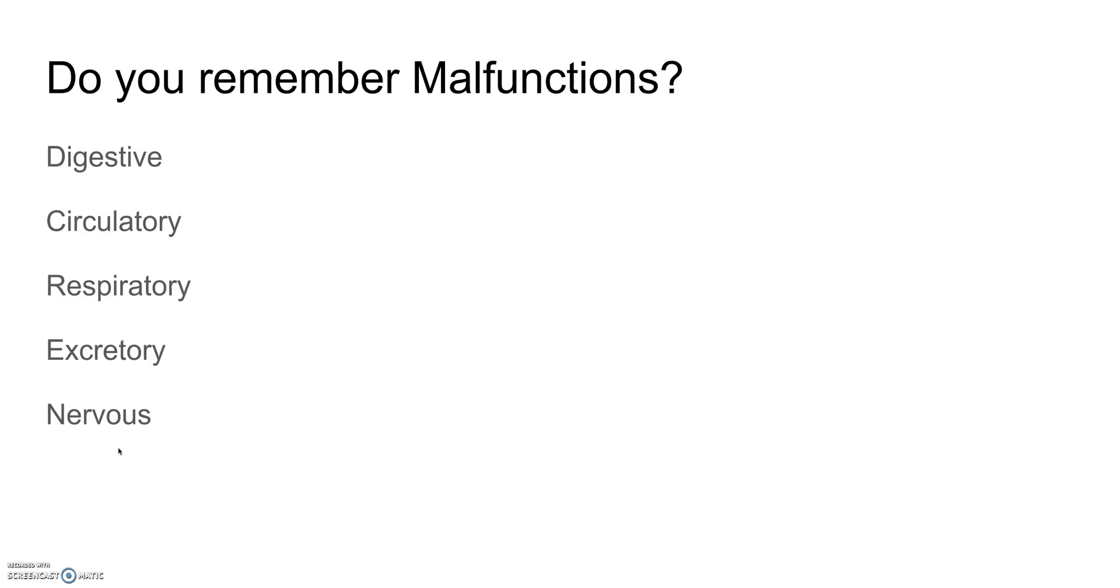Cancer can affect any human body system but you got to pinpoint an organ. If it's cancer for the digestive system you can say cancer in the colon - colon cancer, stomach cancer, esophageal cancer, throat cancer. Circulatory system - leukemia, cancer of the blood. Respiratory system - cancer of the lungs. Excretory system - cancer of the kidneys. Nervous system - cancer of the brain, brain tumors.